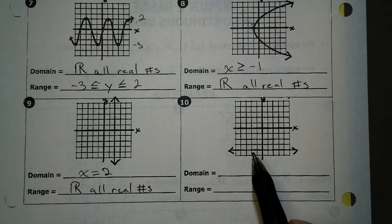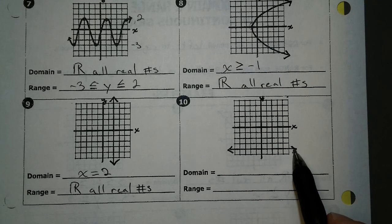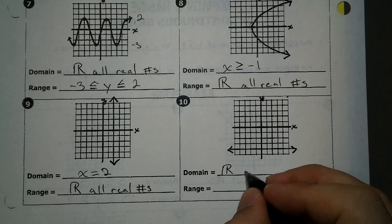All right, so on our domain, we're looking left and right. On the left side, I've got an arrow. On the right side, I've got an arrow. Continues forever. So our domain is all real numbers.